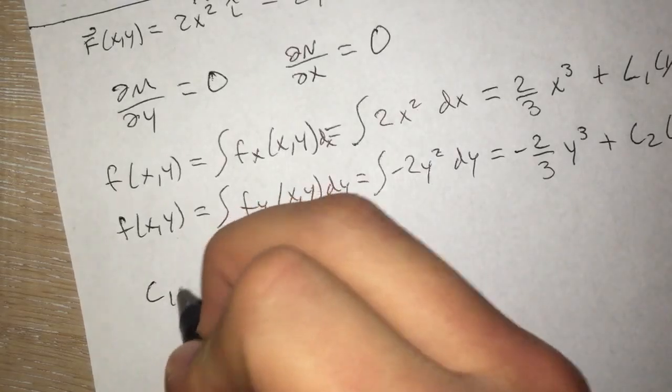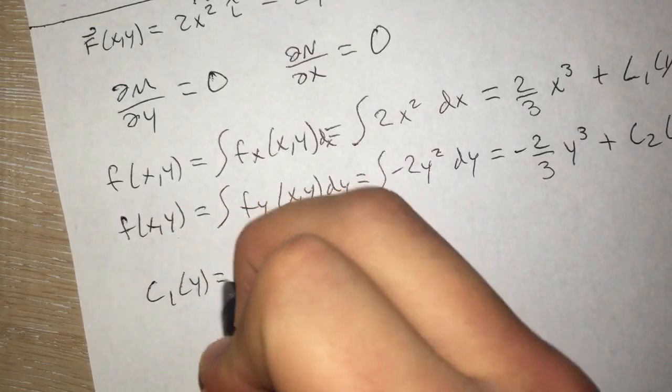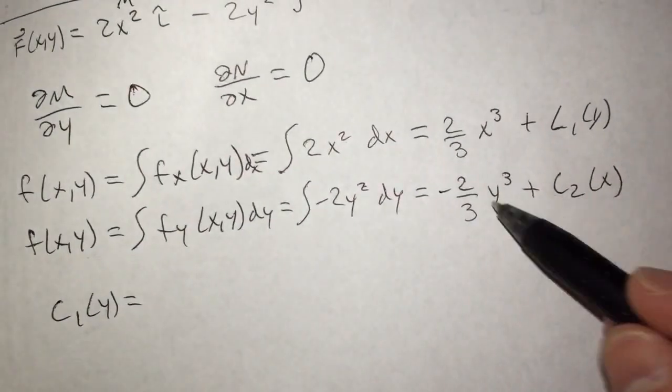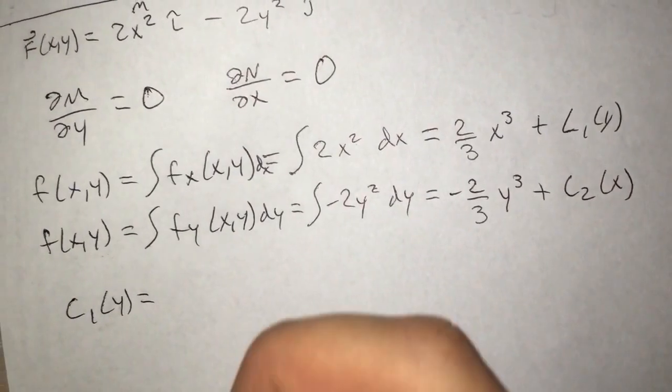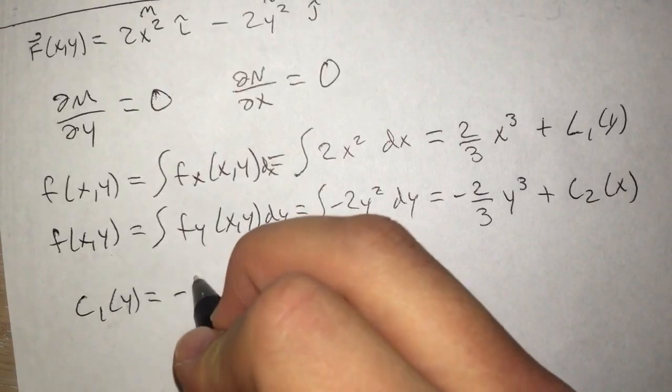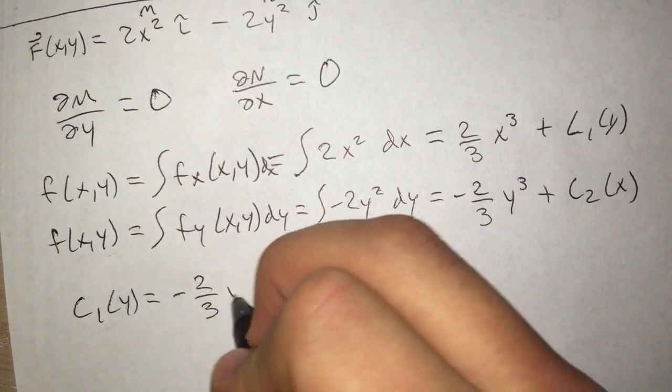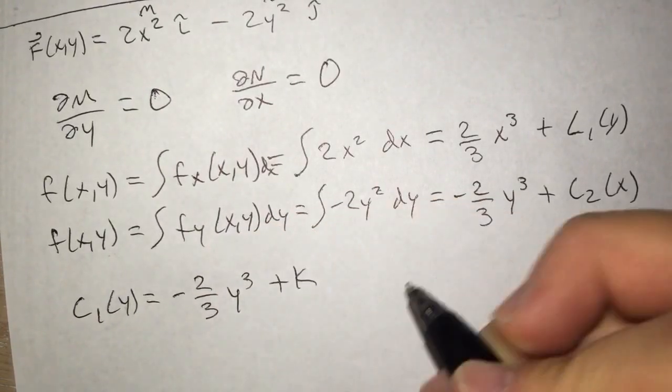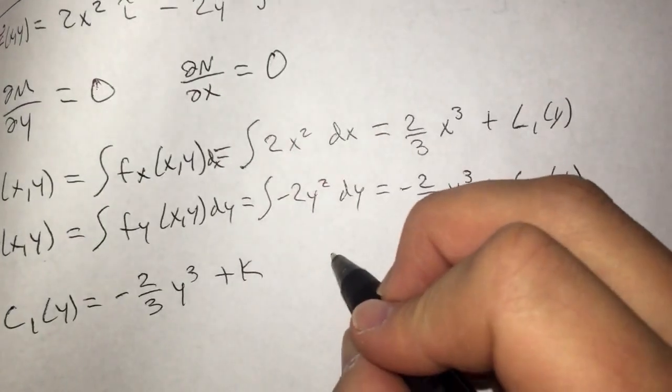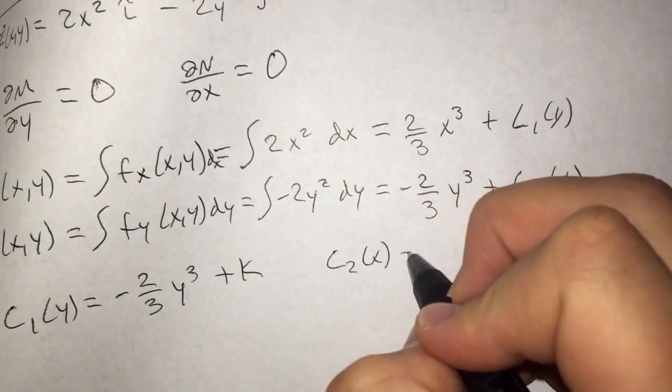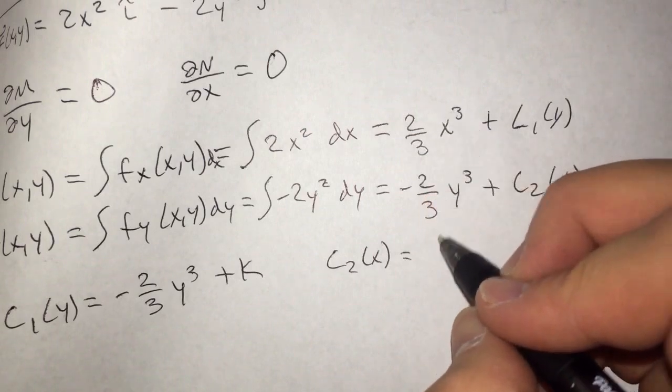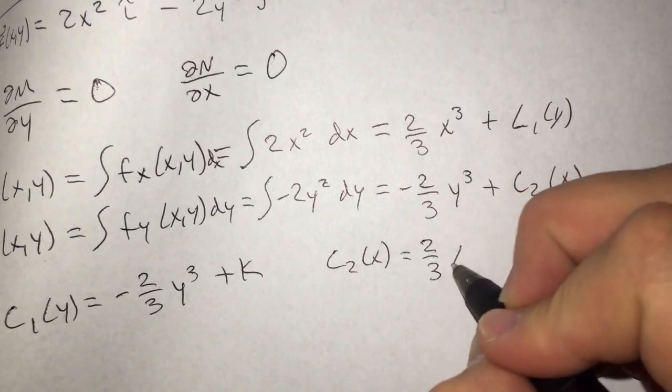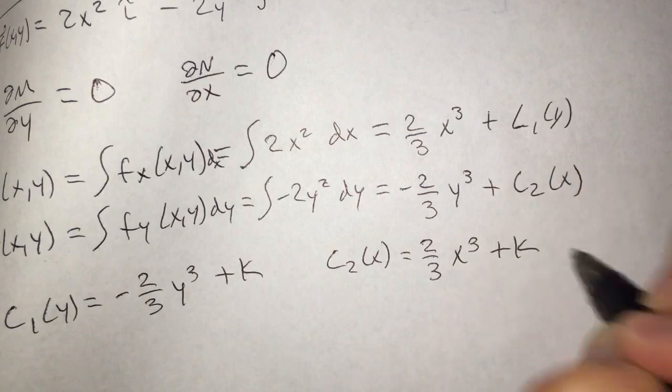So our c₁ of y is going to be equal to this because you don't have that up here. So it's the term that is not like. So -(2/3)y³ and then plus your k. And then for c₂ of x, that is going to equal this portion right here, which is your (2/3)x³ and then also your plus k.